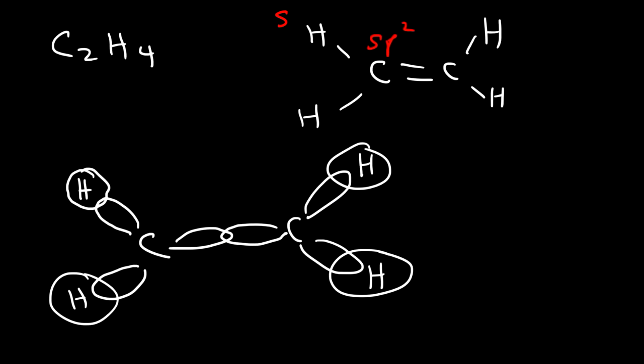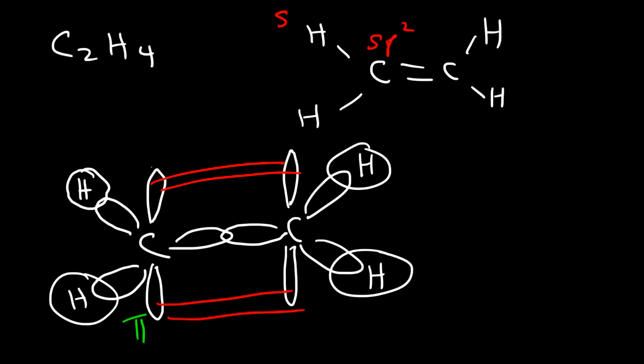Now the pi bond arises due to the unhybridized p orbitals that exist above and below the sigma bond. This forms the pi bond, and the sigma bond is in the middle. Now you can visually see how a sigma bond and a pi bond look alike and how they differ.